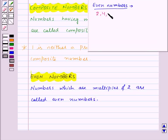4, 6, 8, 10, 12, etc. are all even numbers as they are the multiples of 2.